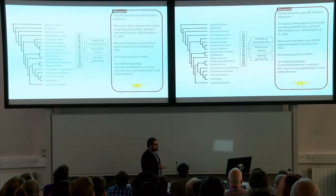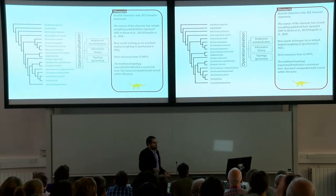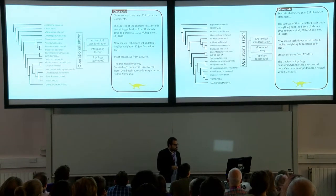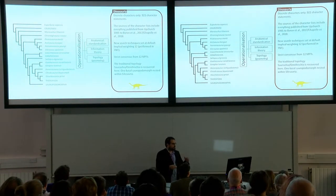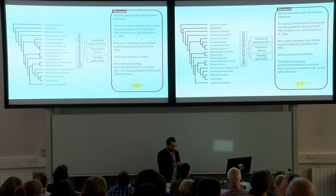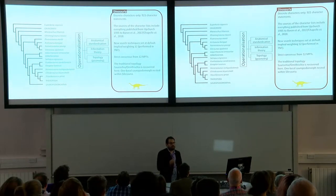Using 921 character statements that are all discrete, I got a different arrangement — basically smaller groups of basal sauropodomorphs. And one thing that I had to start doing is basically operationalize all of the discrete characters.